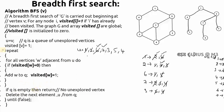Continuing, U is 3; adjacents of 3 are 2 and 4, but both have state 1, so nothing is added. Next, U is 5; adjacents of 5 are 6, 7, and 4 — all have state 1, so nothing added. Similarly for node 4. Now Q is empty, so we return. All vertices have been visited and the traversal is complete.